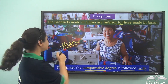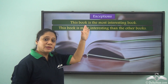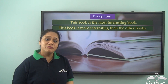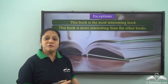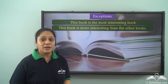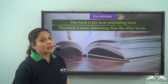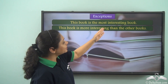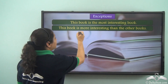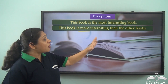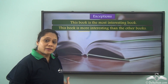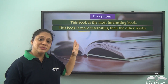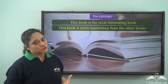Let us read this sentence: 'This book is the most interesting book.' Here we are talking about a particular book in comparison with many other books, so we are using the superlative degree. However, people may also say 'This book is more interesting than the other books,' using 'more' before 'interesting' when comparing one book with many others. This is an exception where the comparative degree is used when comparing more than two things.